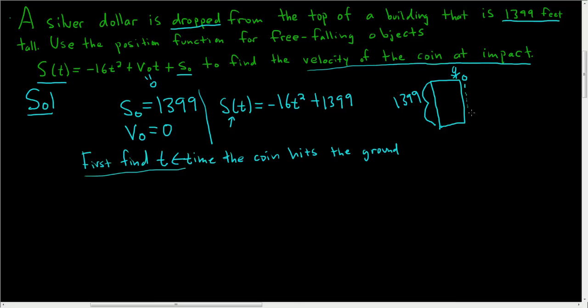Well, when the coin hits the ground, the actual height is equal to 0. So we have our height function, so we just set S of t, which is our height, equal to 0.